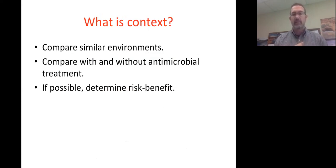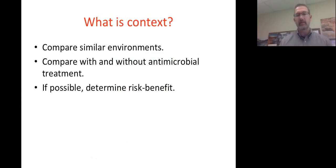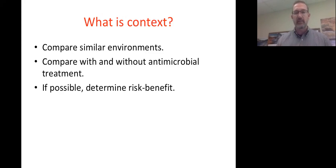What I want to talk about today is context. When we have resistance — and I've told you we're going to find it in almost all environments — those studies have to compare similar environments to see if antibiotic use in animal agriculture produces more resistance than a similar environment without it. We should also compare groups with and without antimicrobial treatment and, if possible, include a risk-benefit analysis.